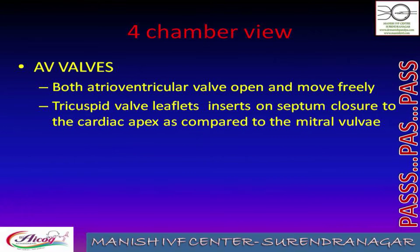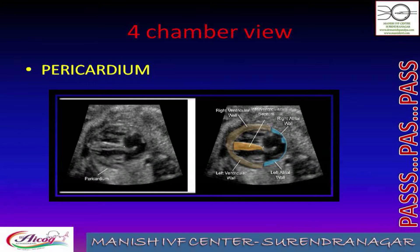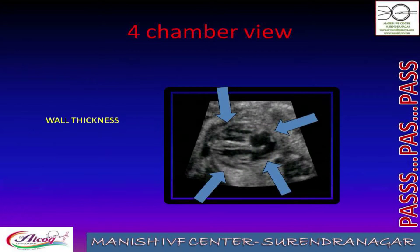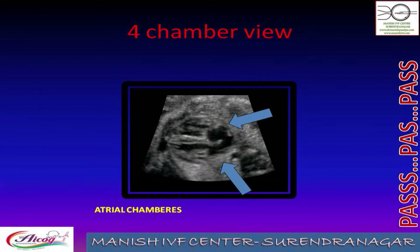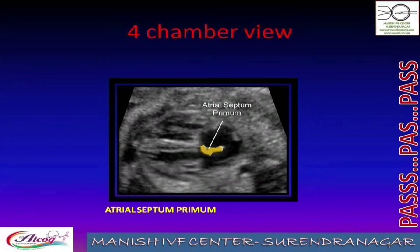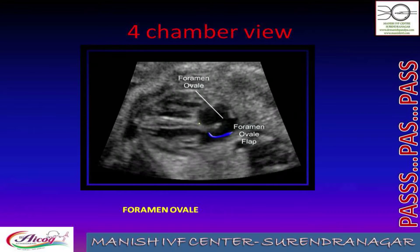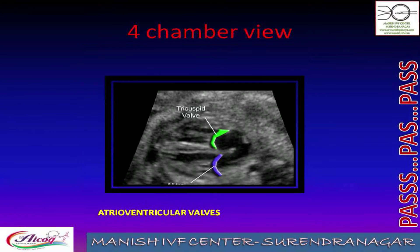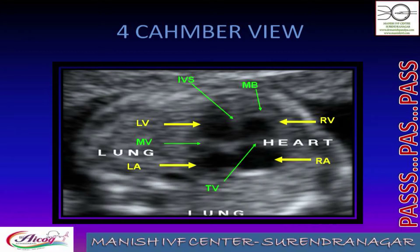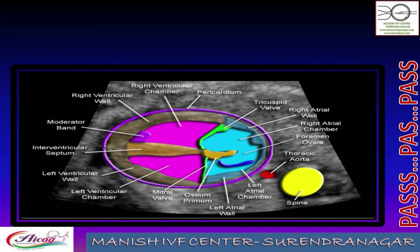Both valves — mitral and tricuspid — should open and move freely, with a normal offset. There should be no pericardial effusion, with normal wall thickness and equality of both atria and ventricles. The presence of septum primum and foramen ovale is confirmed, and normal offset of mitral and tricuspid valves illustrates all four-chamber anatomy.